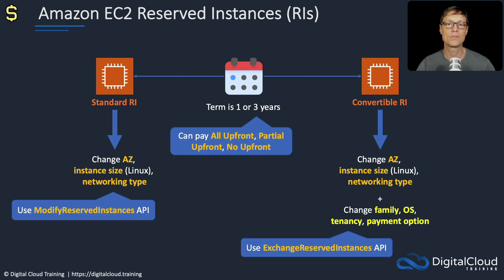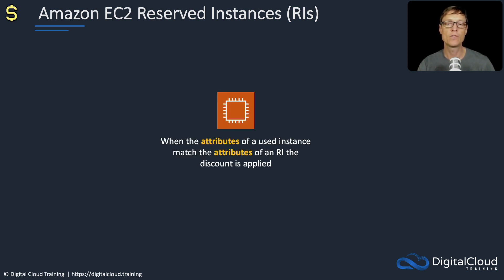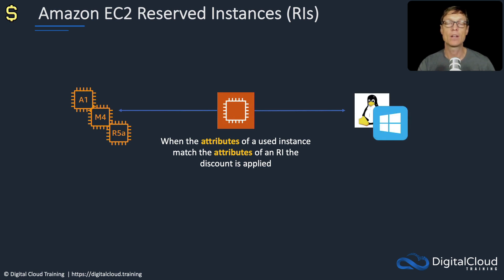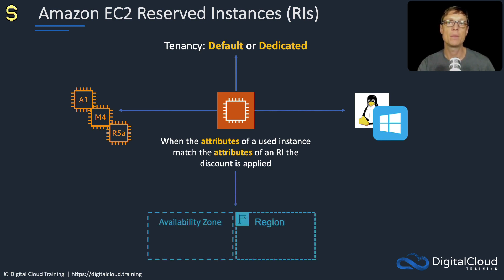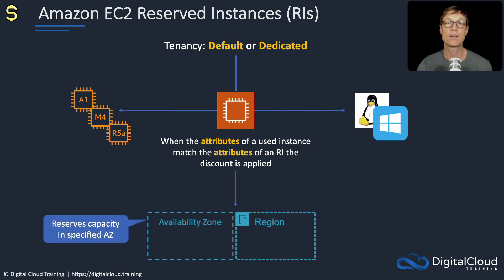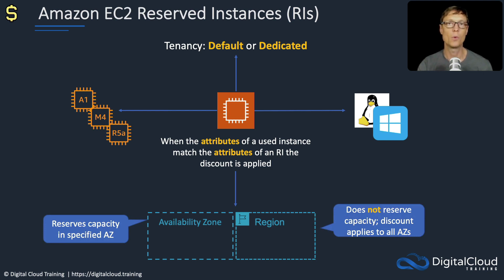When the attributes of an instance you've launched match the attributes of a reserved instance, that's when the discount gets applied. Attributes include the instance type, operating system, tenancy (default or dedicated), availability zone, and region. When you specify an availability zone, you can also reserve capacity in that AZ. But by region, it does not reserve capacity — however, the discount does apply to all availability zones.